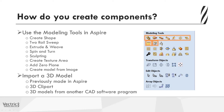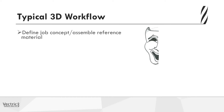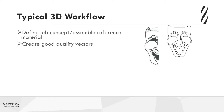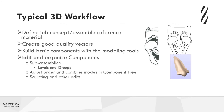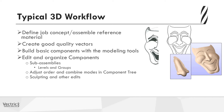When creating your job, the typical workflow starts with defining your job concept and gathering your reference material — information from your customer or things you bring together to begin your design. Then you need to create good quality vectors, as all 3D work will benefit from them — the better the vectors, the better the model. With those vectors, you'll begin to build the basic components with the modeling tools. As you build more shapes, you'll need to organise your components into sub-assemblies using levels and groups, and adjust the order of the combine modes in the component tree.